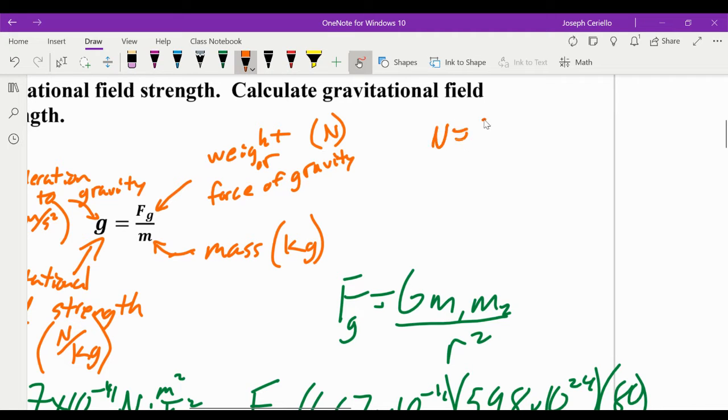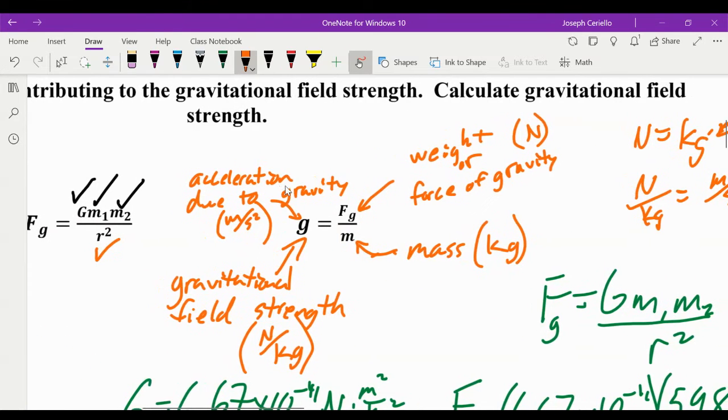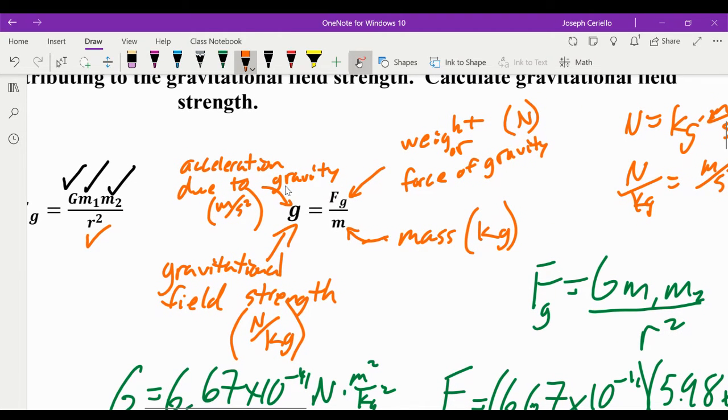We know that a newton is equal to a kilogram times a meter per second squared. Force equals mass times acceleration. So if we divide both sides by kilograms, we get that a newton per kilogram equals a meter per second squared. So we know that those are equal to each other. It's just basically two different ways to describe the same ratio.